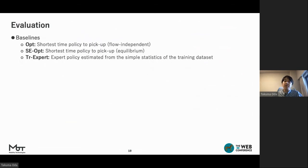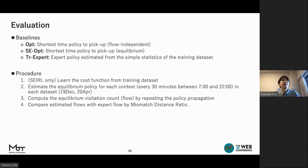We compare our approach with three baselines. First one is OPT, in which we let cost be travel time and obtain the policy by usual value iteration. Second is SE-OPT, we let cost be travel time again but obtain equilibrium policy. Finally, training expert is the expert policy calculated from the simple statistics of the training dataset. The evaluation was performed as follows. First, learn the cost function from training dataset. Second, estimate the equilibrium policy for each context in each dataset. Third, compute the equilibrium visitation count by repeating the policy propagation. Finally, compare estimated flows with expert flow by mismatch distance ratio.